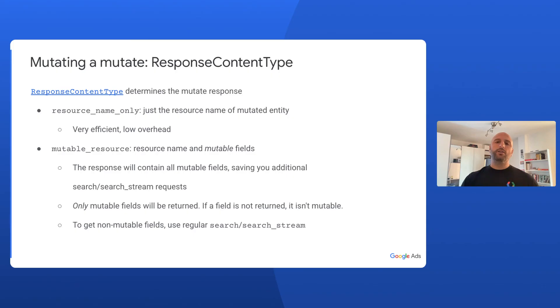Now, earlier we touched briefly on the topic of payload size and number of requests for performance improvement. The final best practice of today's episode is exactly about this. You can set the response content type in all your mutate request objects, and this will determine the content of the response you will receive once your request is completed. By default, mutate operations will only return the resource name of the mutated entities. But you can also choose to set the response content type to mutable resource, to also receive the mutable fields of the resource you just mutated in the response. This will allow you to verify that your resource was mutated correctly, or to reuse it in subsequent operations without needing to issue an additional API request to retrieve it.